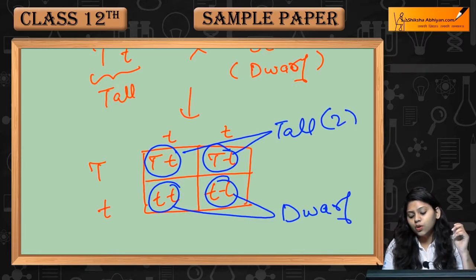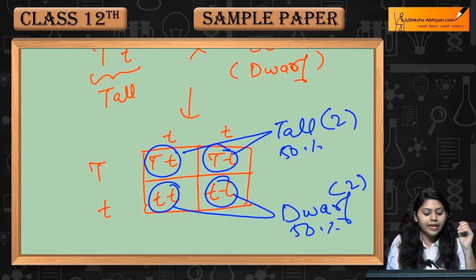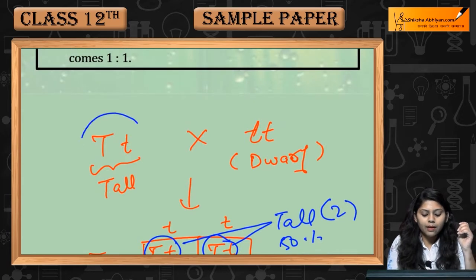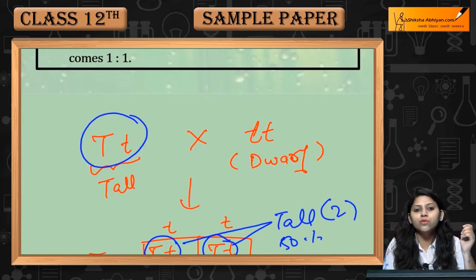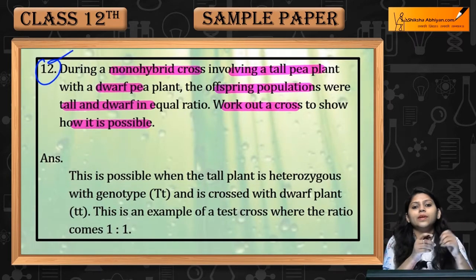Out of four, two are tall and two are dwarf. This means 50% tall, 50% dwarf. This is only possible if the parent is heterozygous for the tall character. This was question number 12.